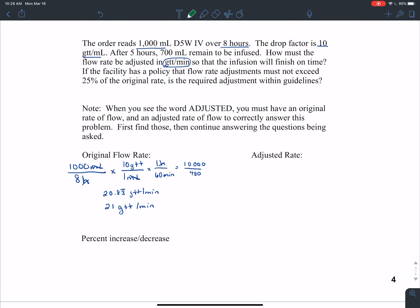Now I'm going to go through a very similar calculation for the adjusted rate. So if we look, they said after five hours. So if we think about that, we started out with an eight hour infusion. Five hours have already passed. So that means that there's three hours left in the infusion. 700 milliliters remain to be infused. So the flow rate we now have is 700 milliliters over three hours.